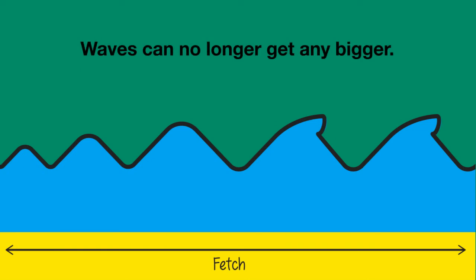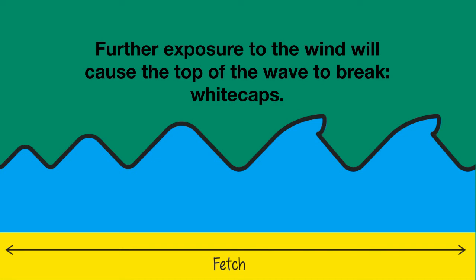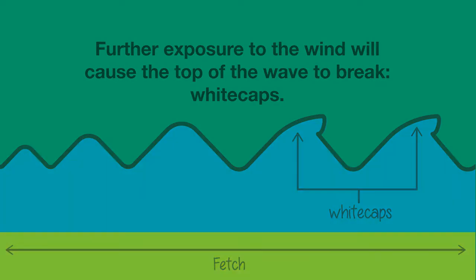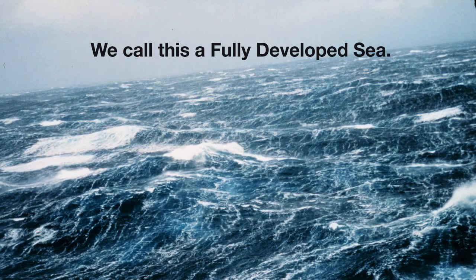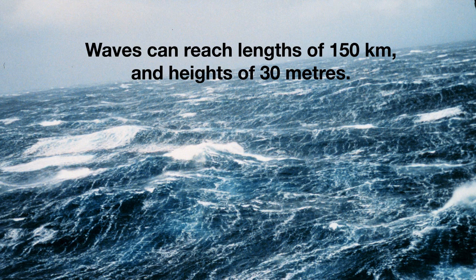When waves get to their maximum size, they cannot grow any bigger, even if the wind gets stronger or blows for longer. Further exposure to the wind will cause the tops of the waves to break and you will have whitecaps. When waves are at the maximum height, we call this a fully developed sea. In the right conditions, waves can reach lengths of 150 kilometres and heights of 30 metres.